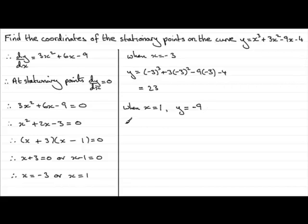So you need to summarize by saying, therefore, stationary points, don't leave it just out there on a limb, stationary points at, and those stationary points are at minus 3, 23, and at 1, minus 9. So that's our stationary points then.